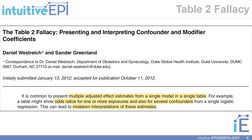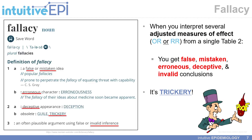Going back to the introductory sentences of the Table 2 fallacy paper's abstract, they talk about it being common to present multiple adjusted effect estimates from a single model in a single table, and that this can lead to mistaken interpretations of these estimates. Here I'm showing the Merriam-Webster dictionary definition of the word 'fallacy.' When you interpret several adjusted measures of effect, such as adjusted odds ratios or risk ratios from a single table, you get false, mistaken, erroneous, and deceptive conclusions.